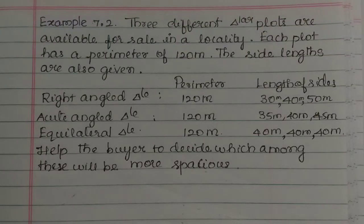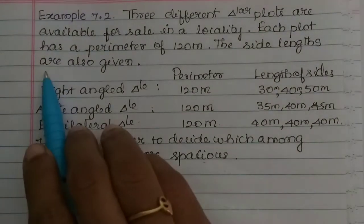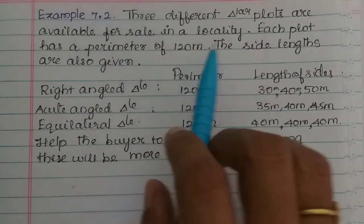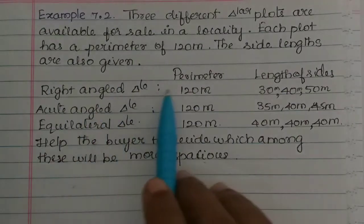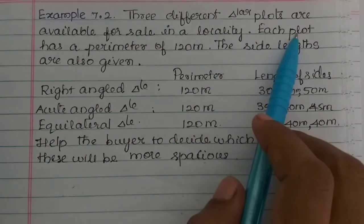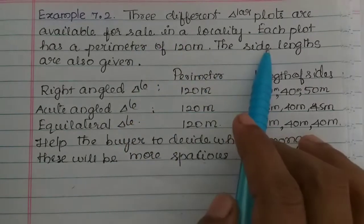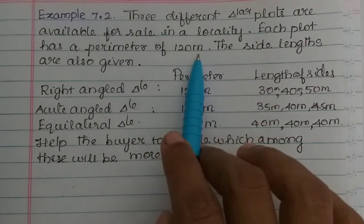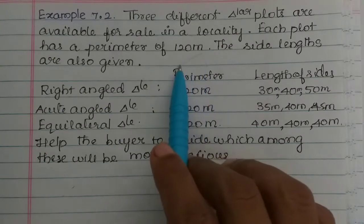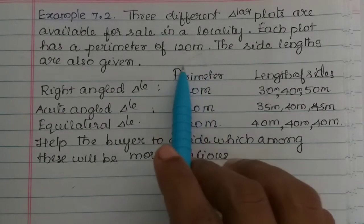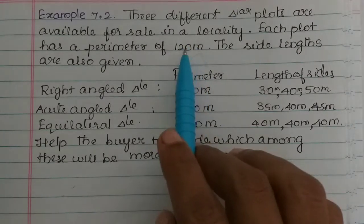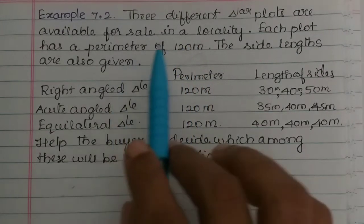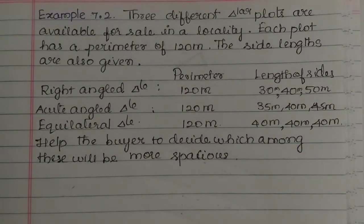Hi students. In this video we see examples of 1.2: three different triangular plots are available for sale in a locality. Each plot has a perimeter of 120m, and the side lengths are also given. The perimeter is the sum of all sides, so that is 120m for every plot. But the space inside — the area — is different for each.